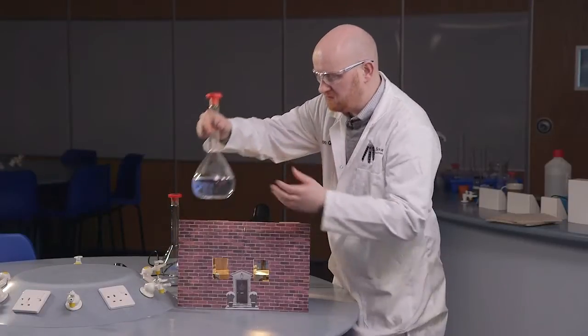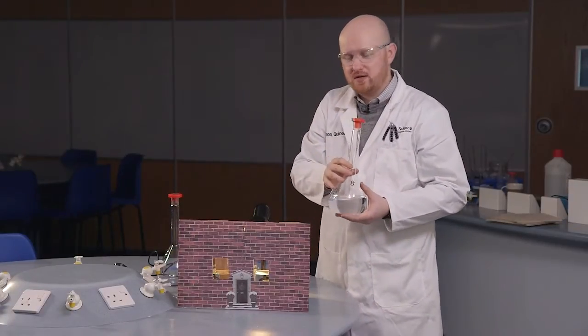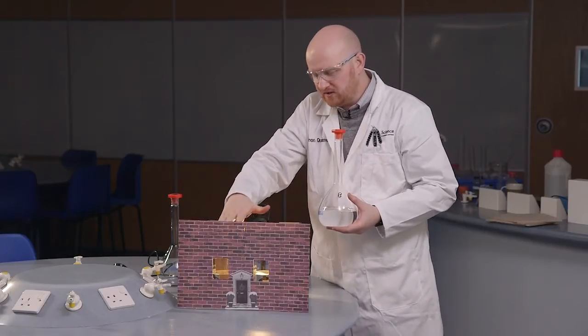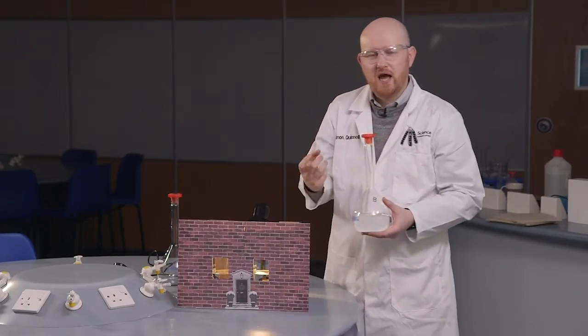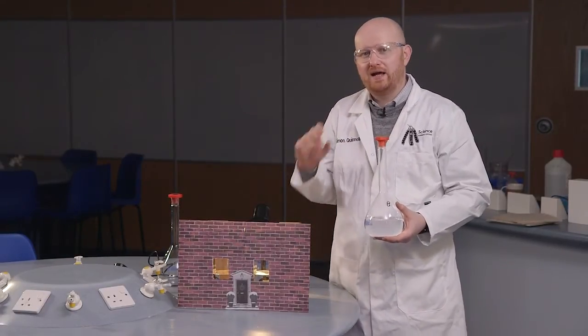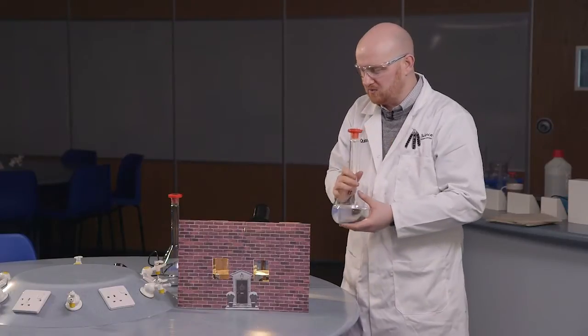Then I'm going to take solution B and I'm going to add solution B to each beaker. So we're going to fill them really to the top and what should happen, as I've said, about 10 to 20 seconds after adding this solution in, they should go dark and our lights and our curtains are drawn and our lights are switched off. So here we go.